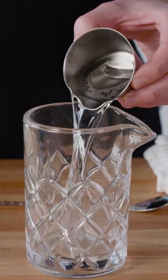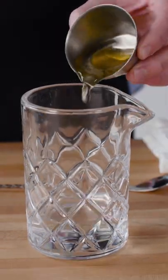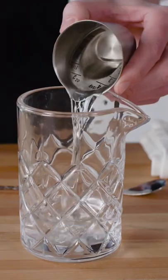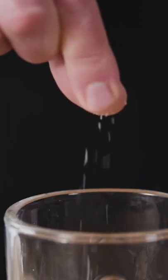This couldn't be easier to put together. We'll start with two ounces of gin, one ounce of olive brine, a half an ounce of vermouth, and a pinch of MSG.